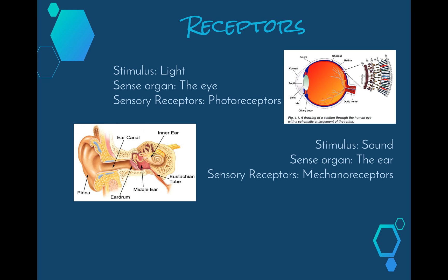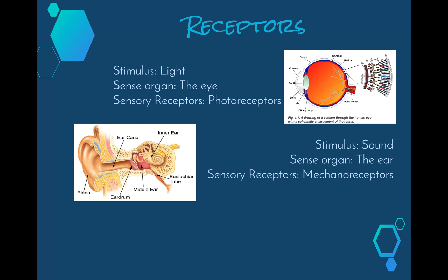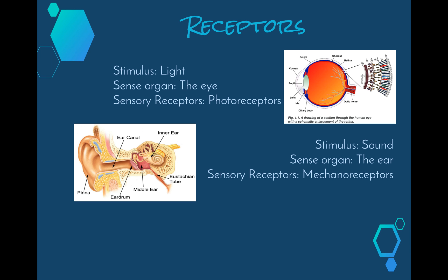The next stimulus we're going to look at is sound. The sense organ to detect sound is our ears. The type of receptors that are found in our ears are called mechanoreceptors — these are tiny hair cells in a part of our ear called the organ of Corti. What they do is detect the sound waves. Think about mechano meaning movement — sound waves are vibrations in the air, so the hair cells in the organ of Corti detect those vibrations.